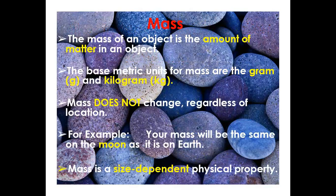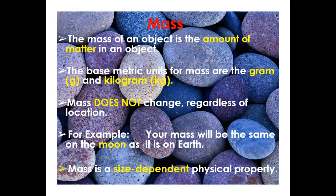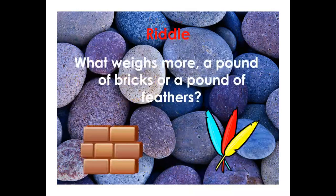Let's talk about mass first. Mass means the amount of matter in an object — for example, the mass of a book is the amount of paper inside it. The base metric units for measuring mass are grams and kilograms. Mass does not change regardless of location: the mass of a book on Earth equals its mass on the Moon. Mass is a size-dependent physical property.